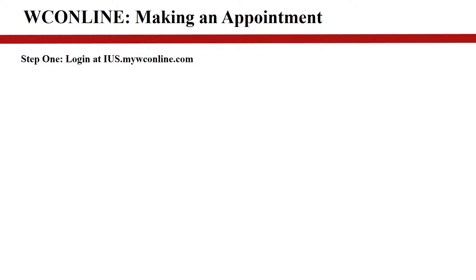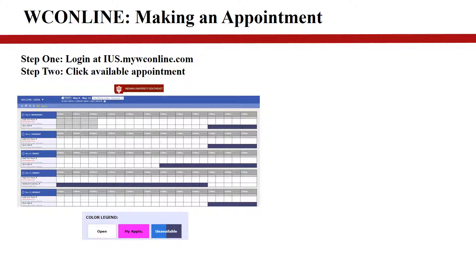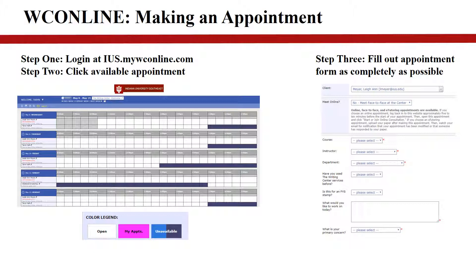Once you have an account, to make an appointment, log in at ius.mywconline.com with your email address and password. When you've done this, you will be taken to our schedule. The color legend seen here is a guide for what the various colored blocks mean. White spaces are available appointment times and you can choose any that meet your needs. Click on the appointment time you'd like and you'll be taken to the appointment form. Please fill it out as thoroughly as possible — the more information you provide, the more targeted assistance we can provide. Note the box that says Meet Online, which lets you choose your appointment type from the three mentioned. Please double check to ensure you are scheduling the appointment type you'd like. Save your appointment and you'll notice the space has changed to pink on the schedule, meaning your appointment is set, but be sure to check the email associated with your account for confirmation as well.